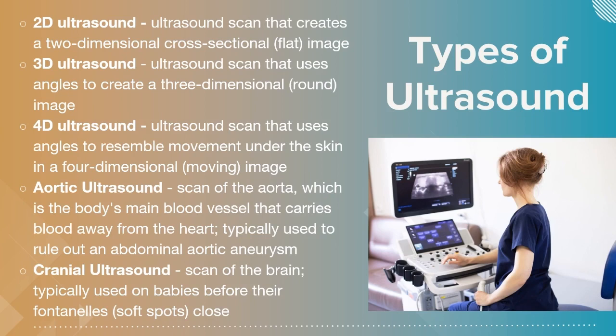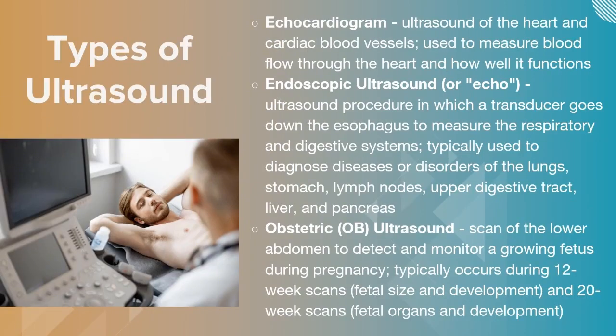Aortic ultrasound scans the aorta, the body's main blood vessel that carries blood to the heart, typically to rule out abdominal aortic aneurysms. Cranial ultrasound scans the brain and is sometimes used with babies, fontanels, bleeds, and different neurological diagnoses, as well as point-of-care ultrasound. Echocardiograms deal with the heart and cardiac muscles, blood measurements, and how the heart is functioning.